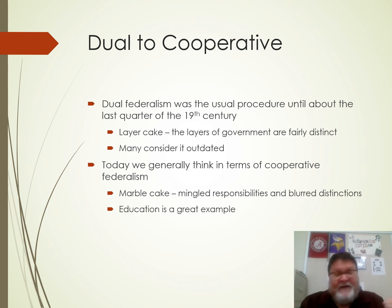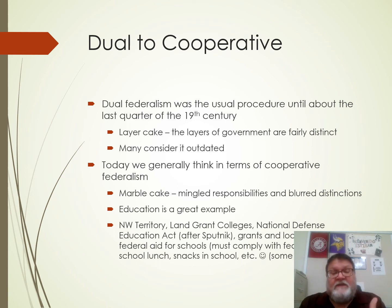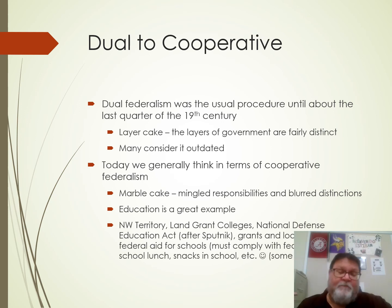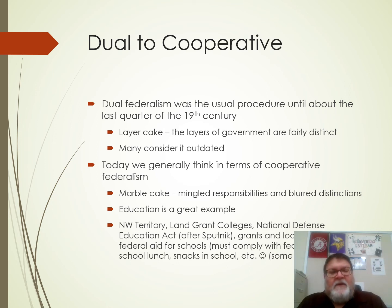A good example is education, since that's why we're here. There have been all sorts of things where the national government and the state government have intermingled, all the way back even to prior to the Constitution — the Northwest Territory, land-grant colleges, and then the National Defense Education Act after Sputnik. When the Soviets launched Sputnik, we went into overdrive and started providing money for education from the national level because it was a defense priority. Grants for federal aid for schools, federal aid for college, school lunch programs, snacks in schools — all sorts of stuff like that have come from the federal level. So it's a great example of intermingled education.